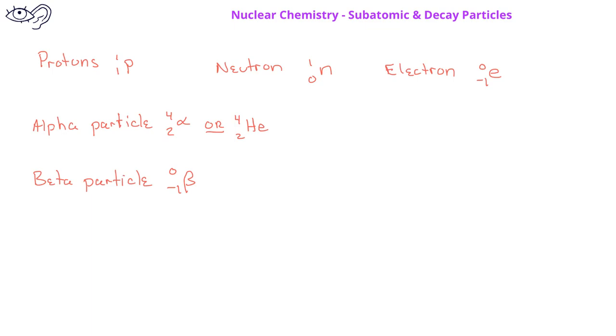Gamma rays are high energy releases of energy represented by a lowercase Greek letter gamma. Gamma rays have no charge and no mass, so we use a mass number of 0 and an atomic number of 0.